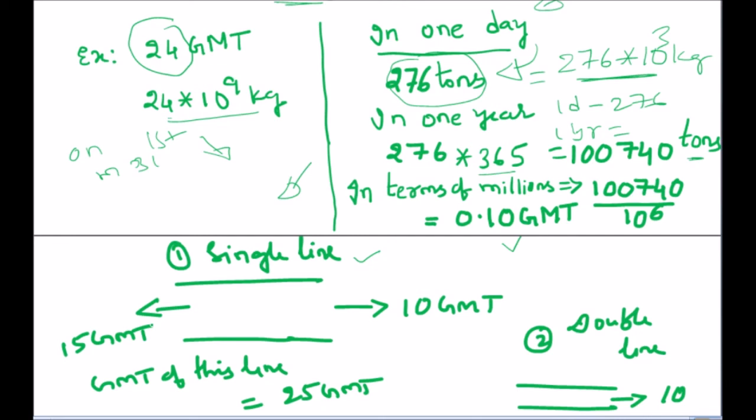For a double line, we have two lines: line number one and line number two. In one direction you have 10 GMT of traffic and in the other direction 15 GMT. If you want to find the GMT of this double line, you take the maximum of the two, which equals 15 GMT.